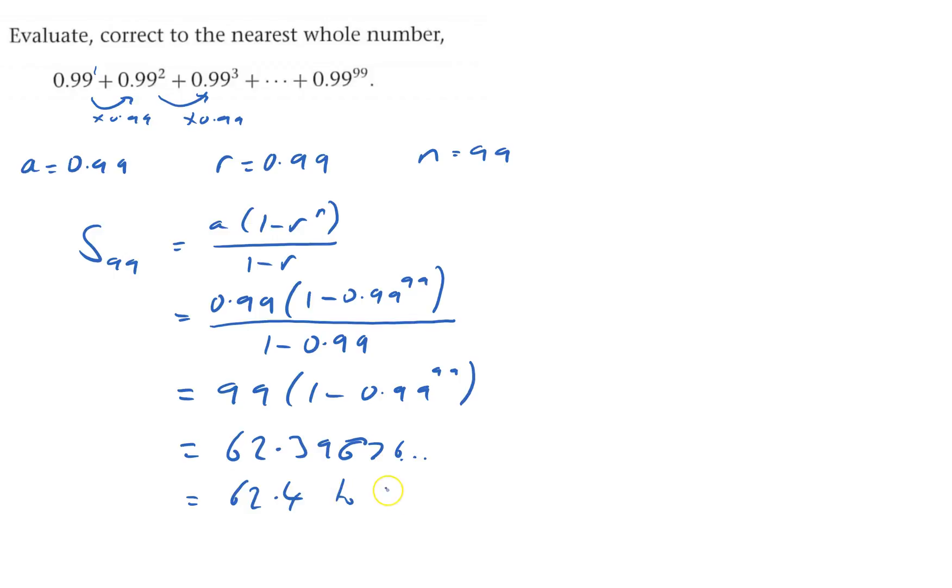Which equals 62.4 to three significant figures. Much quicker to use the formula than doing it longhand, and that's done.